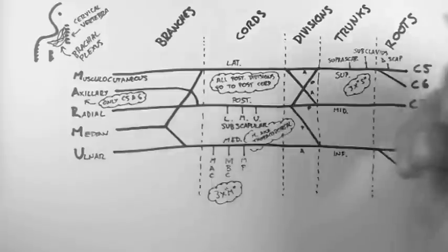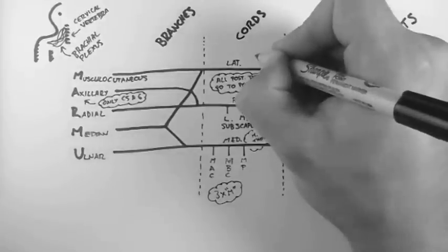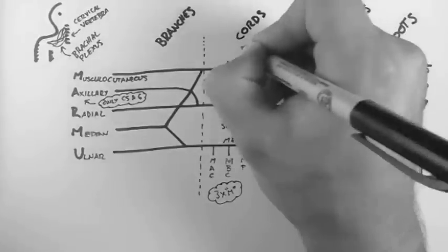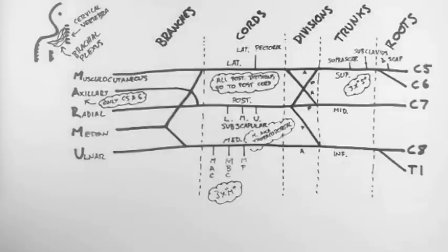Now there's one last nerve we need to consider. And that arises here from the lateral cord. And that nerve is a lateral pectoral nerve.